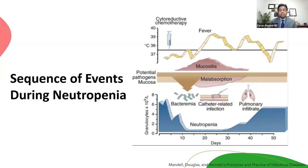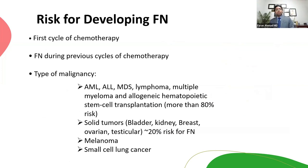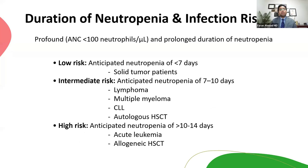Around day 10 after cytotoxic chemotherapy, patients develop mucositis and malabsorption, and that's when bacteria and catheter-related infections occur because neutropenia is present. The type of malignancy determines neutropenia risk — AML, ALL, and MDS are the most common. Duration of neutropenia also guides risk stratification: anticipated duration less than seven days in solid tumor chemotherapy is low risk, whereas anticipated duration up to 14 days or more in high-risk patients requires more aggressive anticipatory treatment.